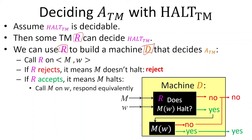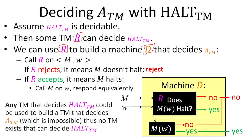So in this case, since HALT told us the machine was definitely going to halt, we could just try it and see what the answer actually was. We didn't make any assumptions about what R was besides that it existed and solved HALT. Any Turing machine that decides HALT can be used to decide ATM. Since ATM was impossible, so was HALT.